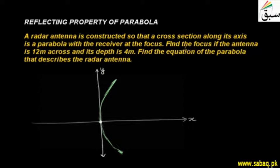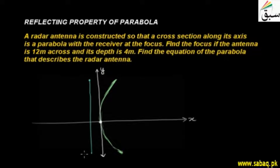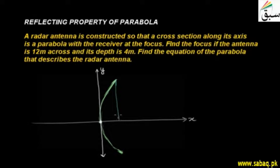The question is: find the focus if the antenna is 12 meters across and its depth is 4 meters. 12 meters across means the total vertical height is 12 meters, so 6 meters is the half-width on each side. This height is 6 meters, and x is the axis of symmetry.